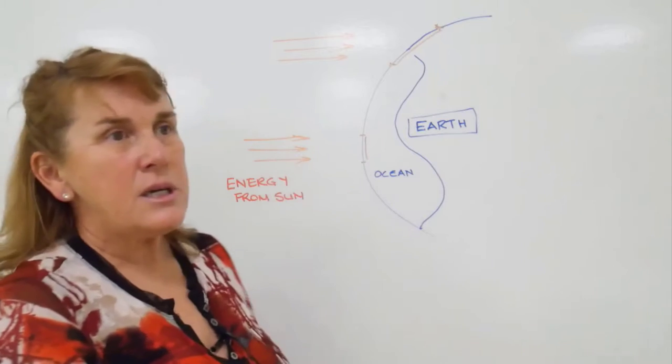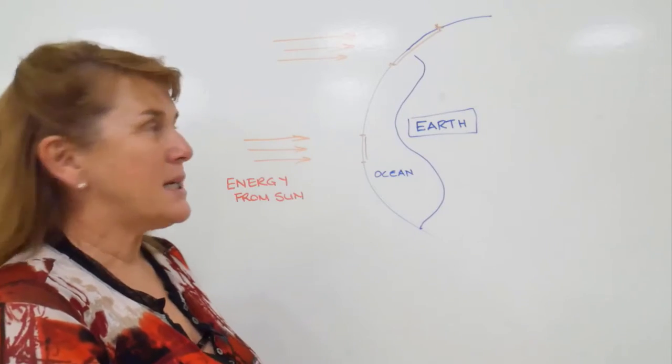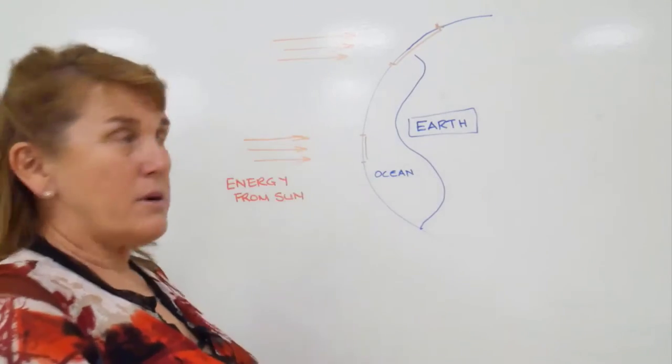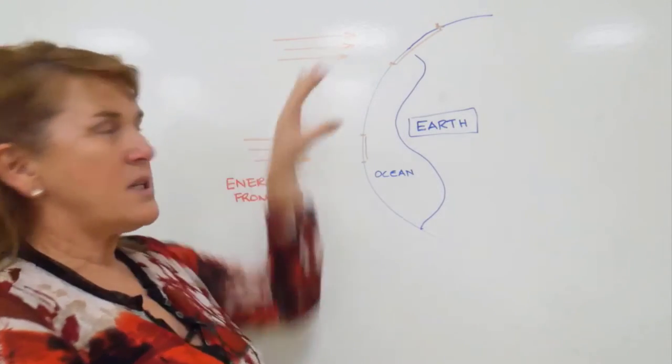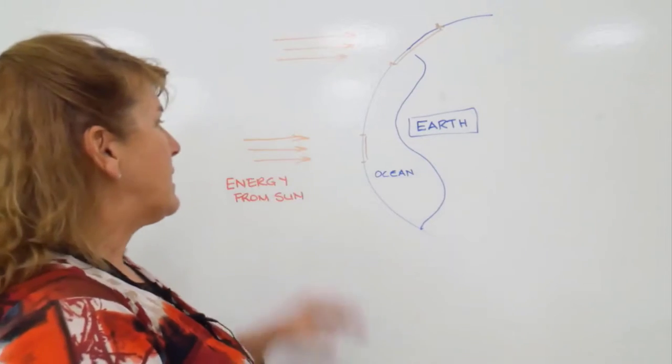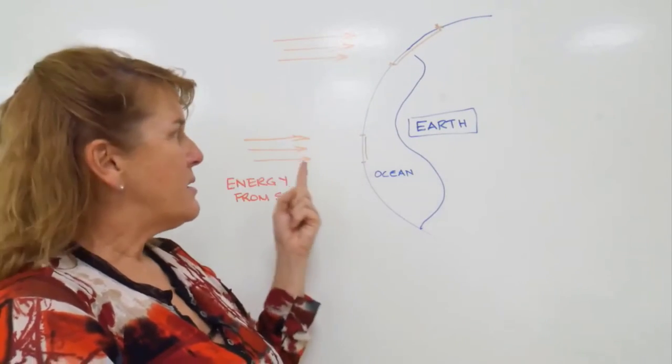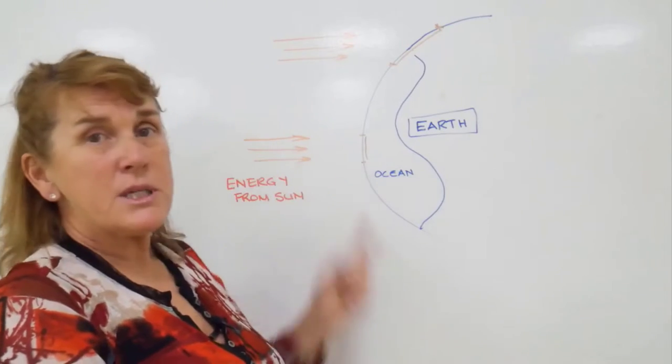I've tried to draw a picture here that illustrates it better. If we think about energy from the sun coming across this zone—if we think about packages of energy for the time being—the energy that strikes the earth near the equator strikes it more or less perpendicular, and so